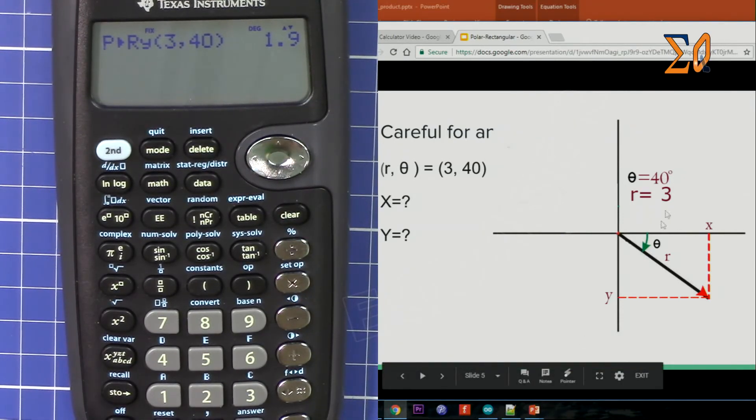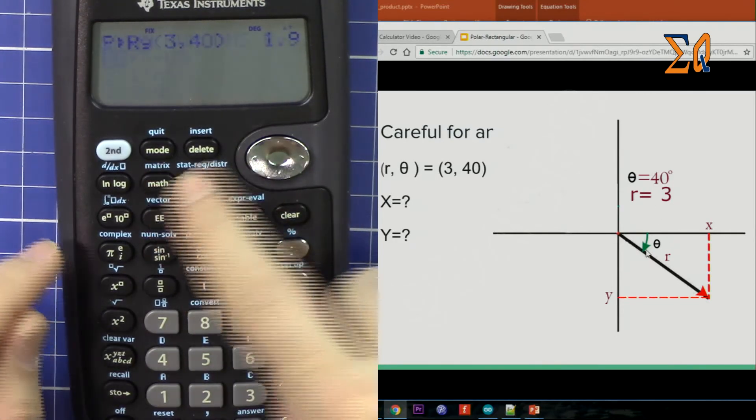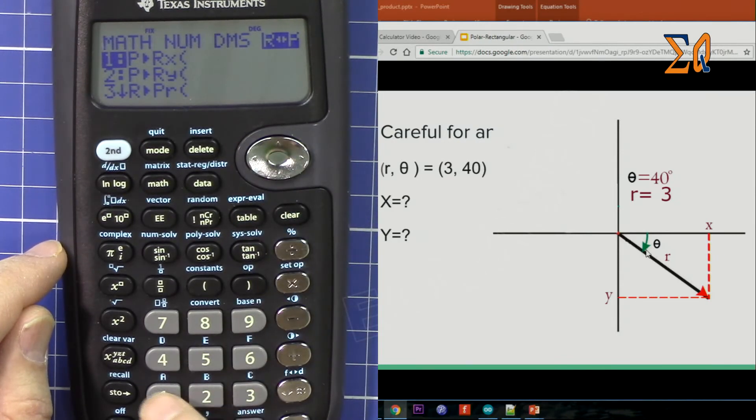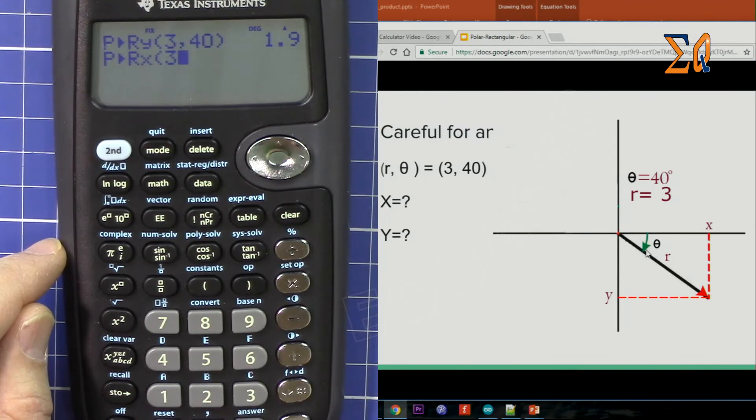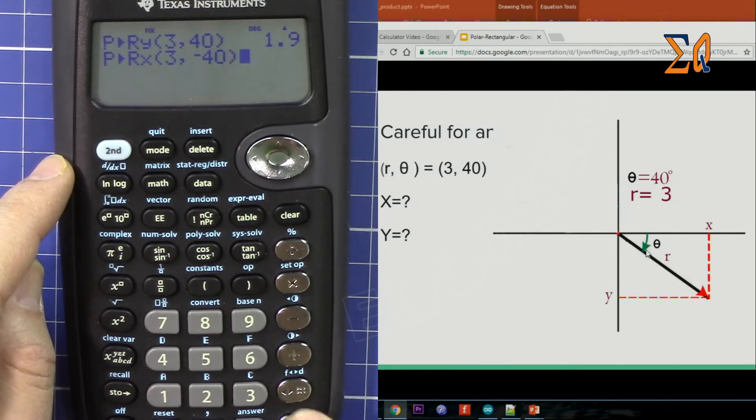So 3, comma, minus 40. If I do that, you get the X. X doesn't change here, but the Y is important.